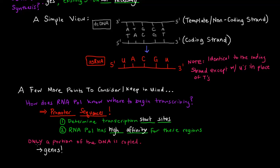One more thing I want to mention is that only a portion of the DNA is copied. And this makes sense if you think about our DNA containing genes. Maybe if we have gene 1, gene 2, gene 3, gene 4, and so on.